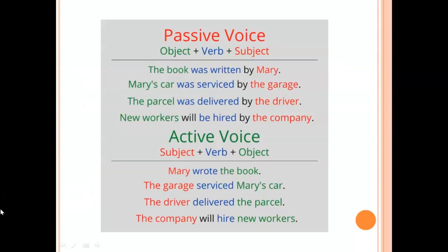The main difference between both voices: in active voice, the subject comes first in the sentence, then the verb, then the object. For example, 'Mary wrote the book' — Mary is the subject, wrote is the verb, and book is the object. This kind of sentence we call active voice. The rule being followed is subject, then verb, then object.